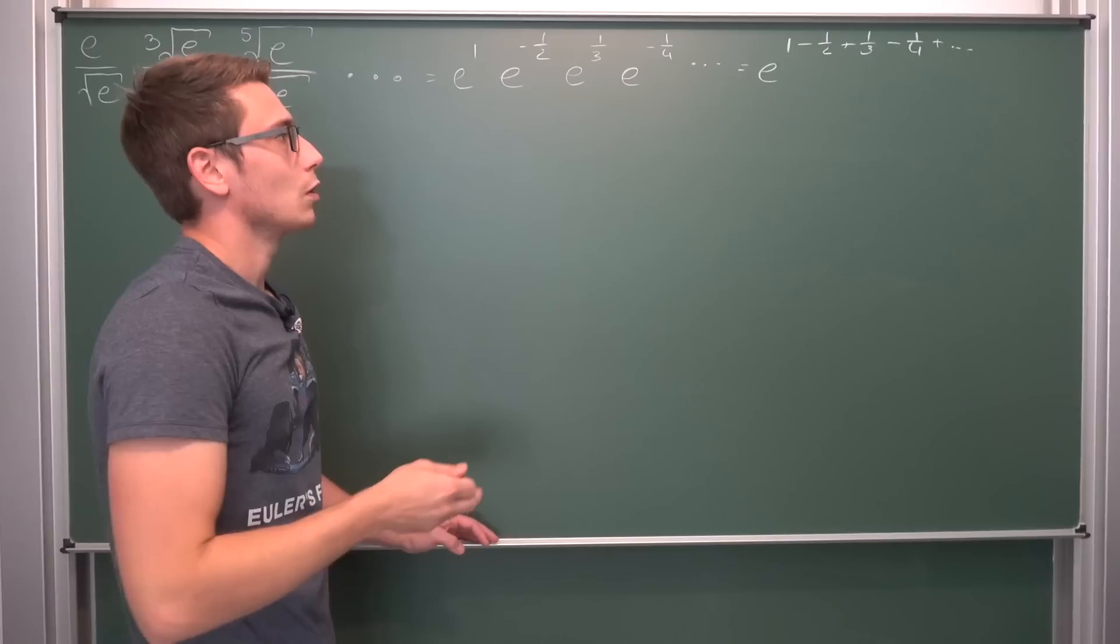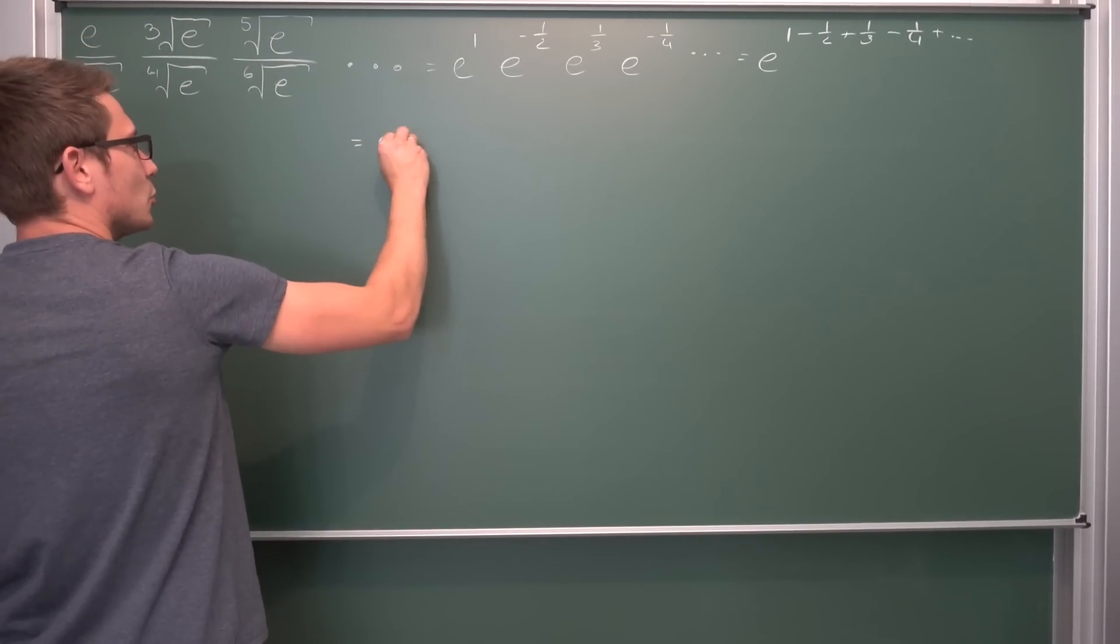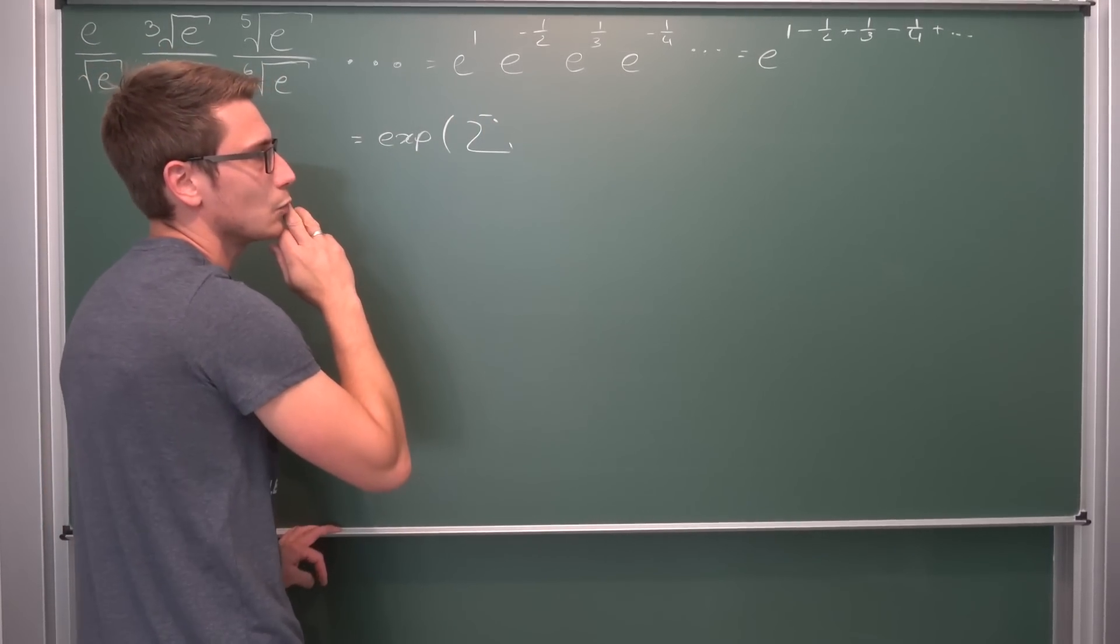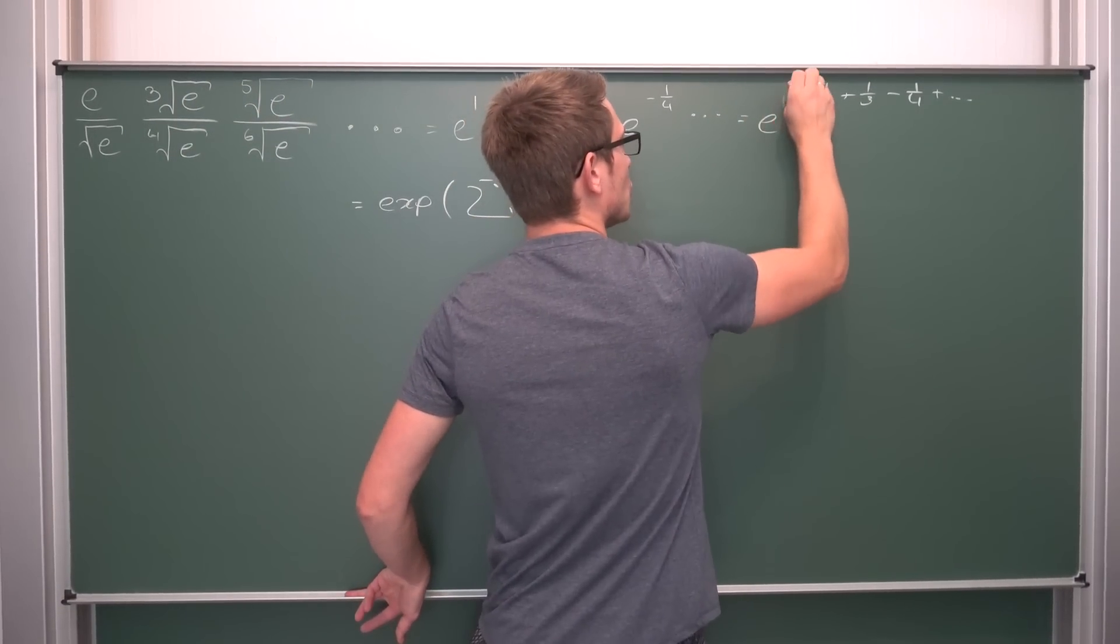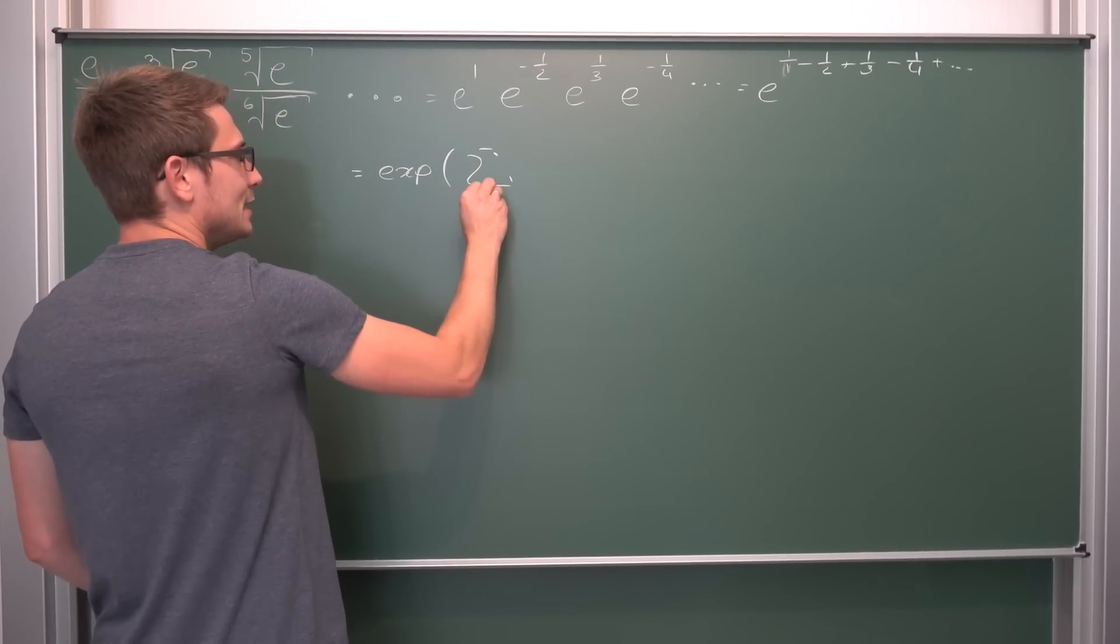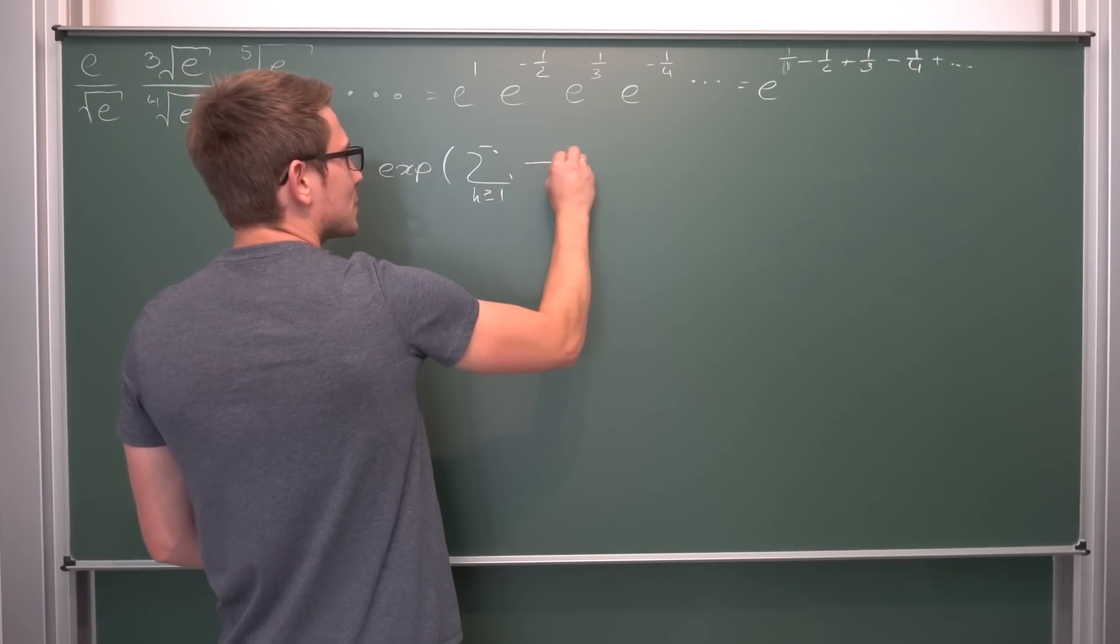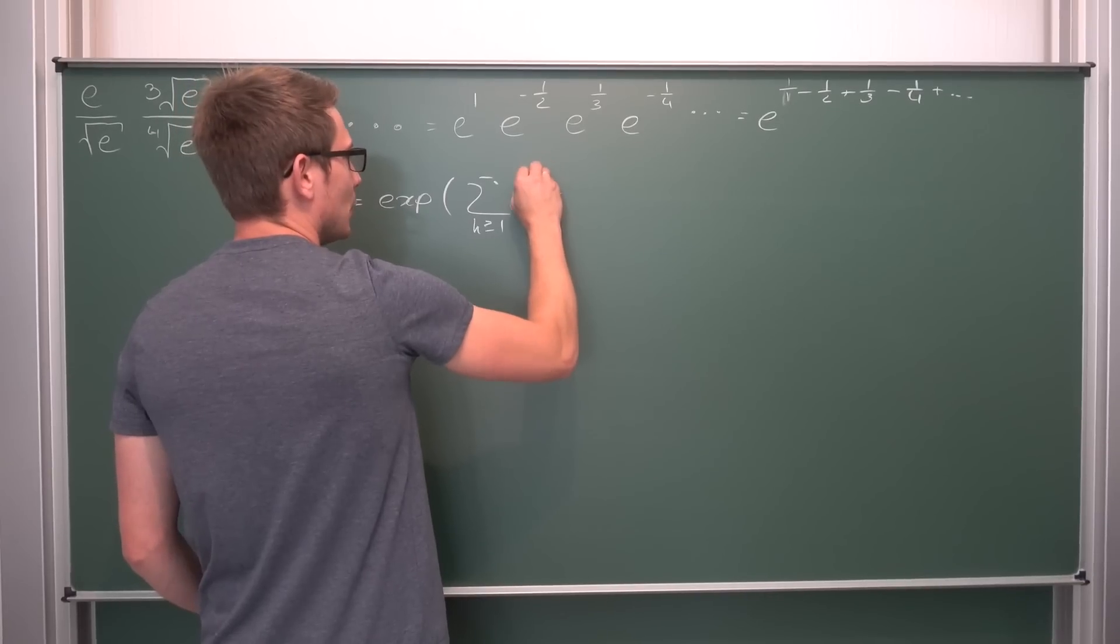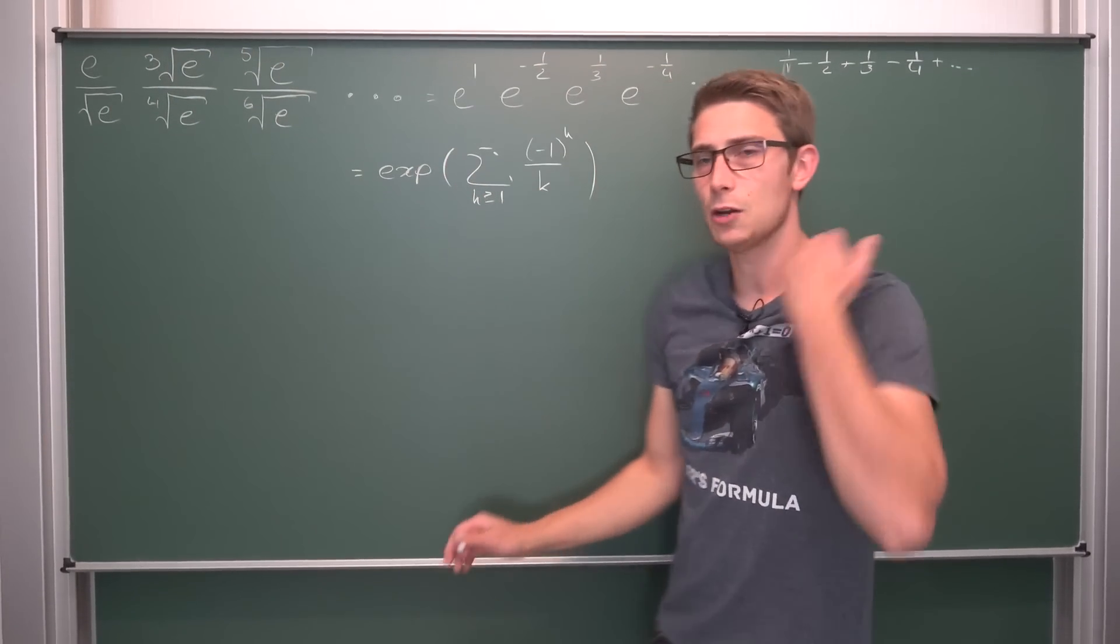This is the same as e to the one minus one-half plus one-third minus one-quarter plus up until infinity. We're going to rewrite this a little more. That's a funky alternating sum. I'm going to use the exp notation to make everything more clear. This is the infinite sum where we're starting at one.